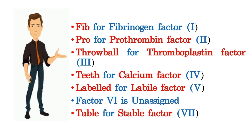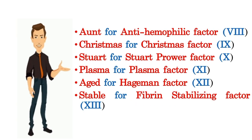Factor 6 has not been assigned. Table is the clue for stable factor, the seventh one. Ant is for antihemophilic factor, the eighth one. We will pick the ninth factor straight from the story — Christmas factor is the ninth one.